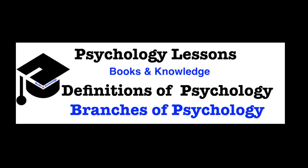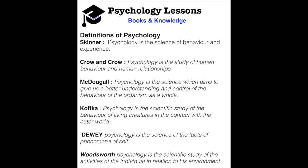Let's look at a few definitions given by famous psychologists. First, Skinner says psychology is the science of behavior and experience — the study of the behavior of man and his experience. Second, Crow and Crow say psychology is the study of human behavior and human relationships — how one person behaves with another and the relationships that arise through the behavior of man.